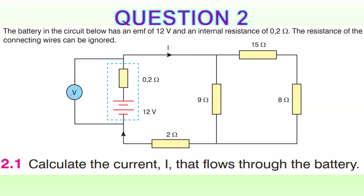As you know, Ohm's law: current equals voltage over resistance. To calculate this current on the main conductor — it is the total current. For voltage, we can use EMF: 12 volts. But we don't know the total resistance — we know individual resistances, but not the total resistance.